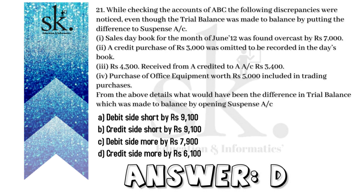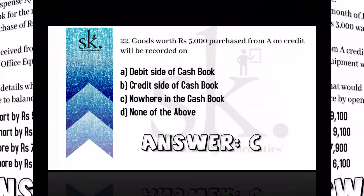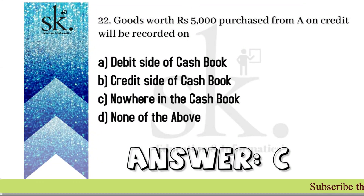Last: purchase of office equipment worth rupees 5,000 was included in trading purchases. It should have gone to the office equipment account. We reduce it from purchases and include it in office equipment, so the debit side remains the same — no impact. Therefore, ultimately the credit side is overcast by rupees 6,100, so the answer will be D.